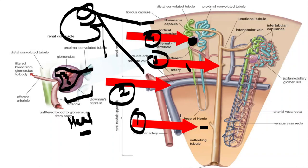Examples include acute interstitial nephritis, thrombotic microangiopathy, and acute tubular necrosis. We will see these in detail when covering acute kidney injury and CKD. For now, just remember anatomically there are four important components, and these four components are associated with various pathological processes.